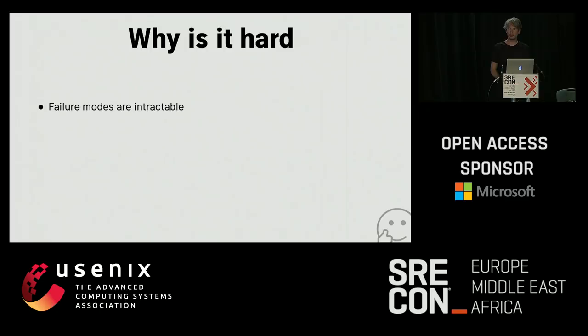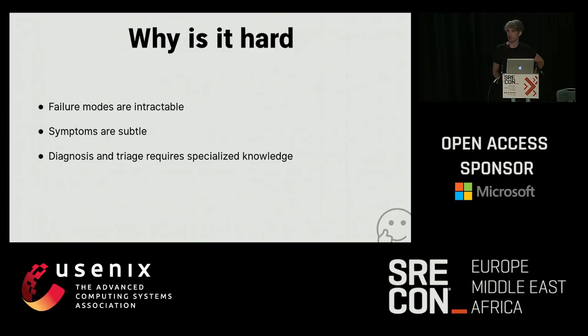In this time, I've learned that this stuff is really hard. Why is it hard? In distributed systems, failure modes are kind of intractable — they definitely exist, but you can't solve them, you just have to deal with them or work around them. The symptoms of failures are quite subtle. Diagnosing and fixing them requires specialized knowledge — your computer science fundamentals that you learned in school are kind of insufficient.